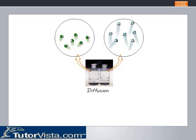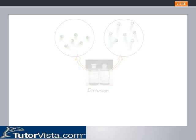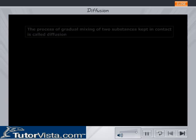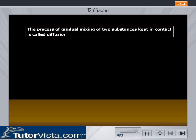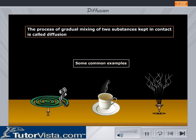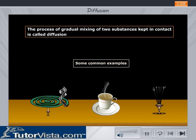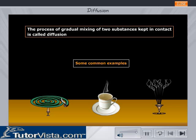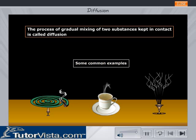Diffusion. The process of gradual mixing of two substances kept in contact is called diffusion. Whenever diffusion takes place, molecules of one substance penetrate through the spaces between the molecules of the other substance to equalize the concentration of molecules in the two substances.